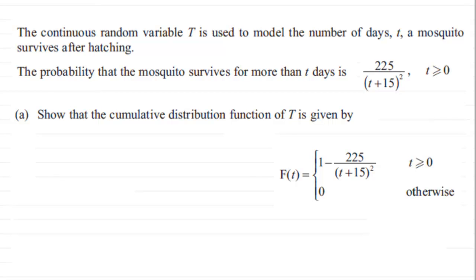Hi. Now, in this example, we're given that the continuous random variable T is used to model the number of days t a mosquito survives after hatching.